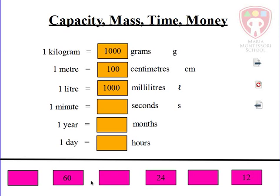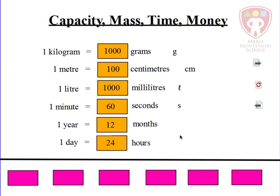One minute — how many seconds in one minute? One minute equals 60 seconds. One year equals 12 months, and one day equals 24 hours. Make sure you are well aware of this because we shall use this in subsequent lessons.